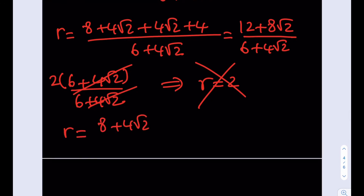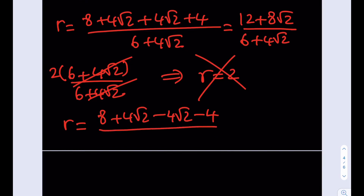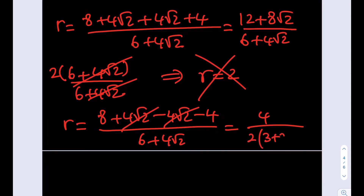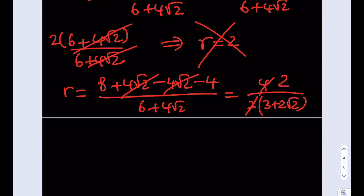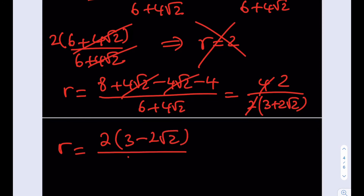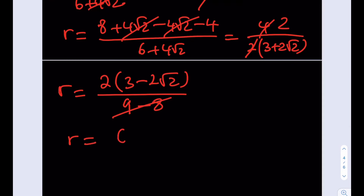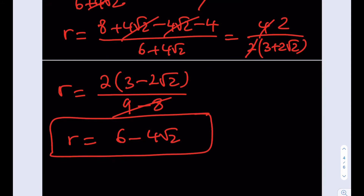Taking the minus sign: 8+4√2 − 4√2 − 4 = 4, so the numerator becomes 4, divided by 6+4√2. Dividing by 2 gives 2/(3+2√2). Rationalizing by multiplying by the conjugate (3−2√2)/(3−2√2), the denominator becomes 9−8 = 1, so the radius is r = 6 − 4√2. You can check that this is a valid solution.